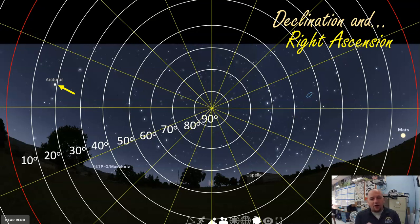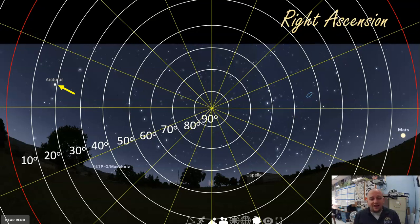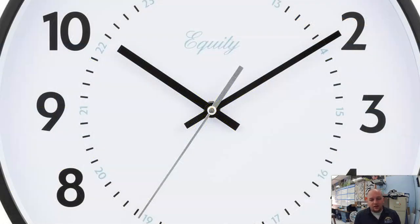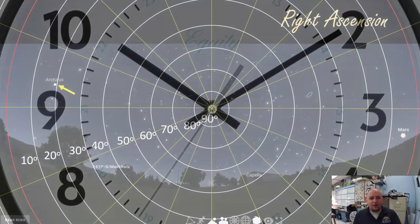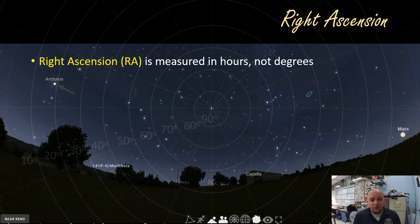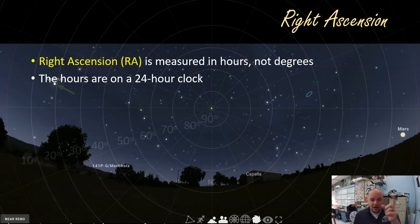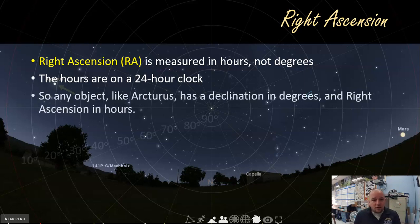Right ascension tells us where on the circle an object is. Instead of using degrees around the circle, we use something more like a clock. With Polaris in the center, right ascension looks like a clock face with lines going around in different values. We measure right ascension in hours, not degrees, and we use a 24-hour clock instead of a 12-hour clock. So going all the way around completes 24 hours of circle. Any object like Arcturus will have a declination in degrees and a right ascension represented in hours.